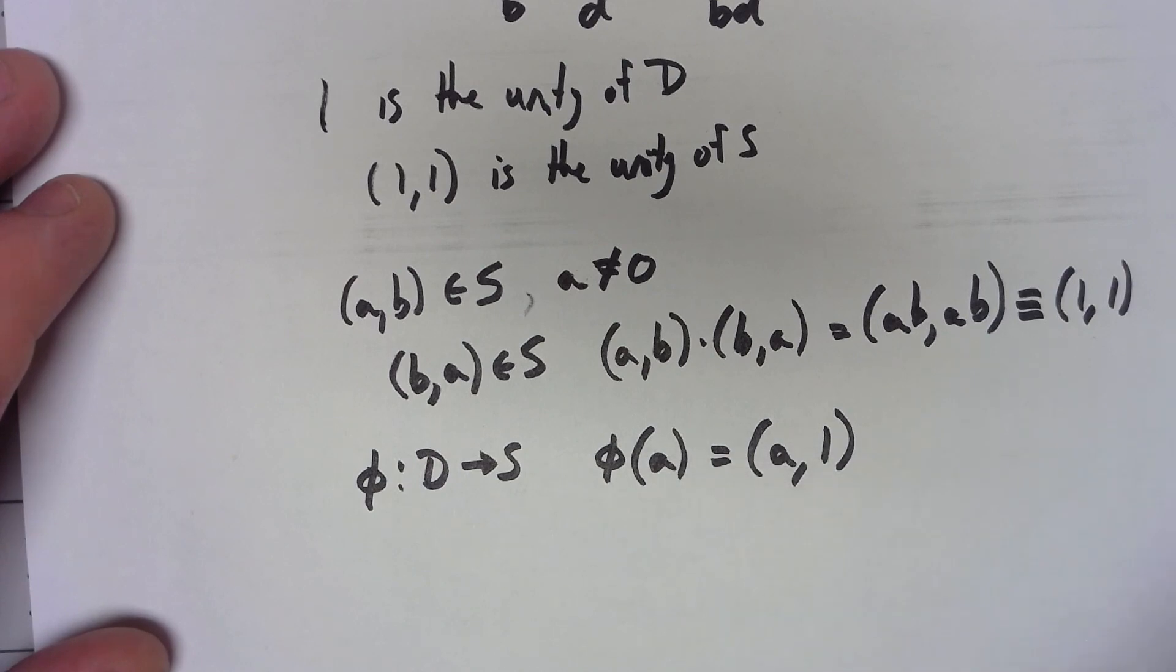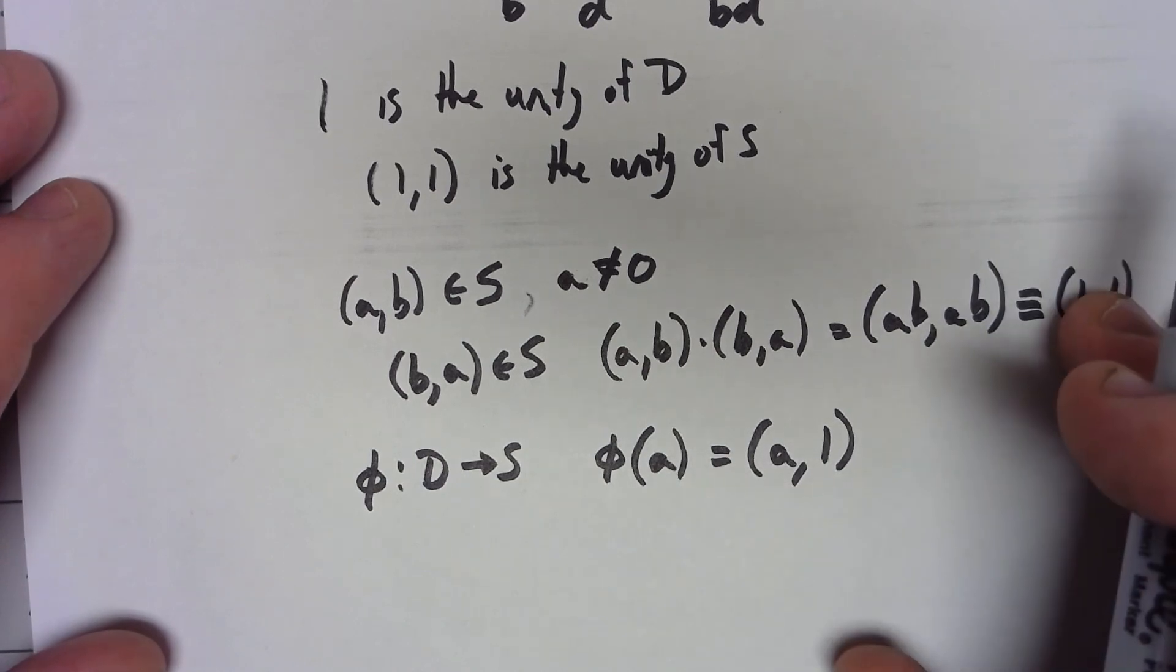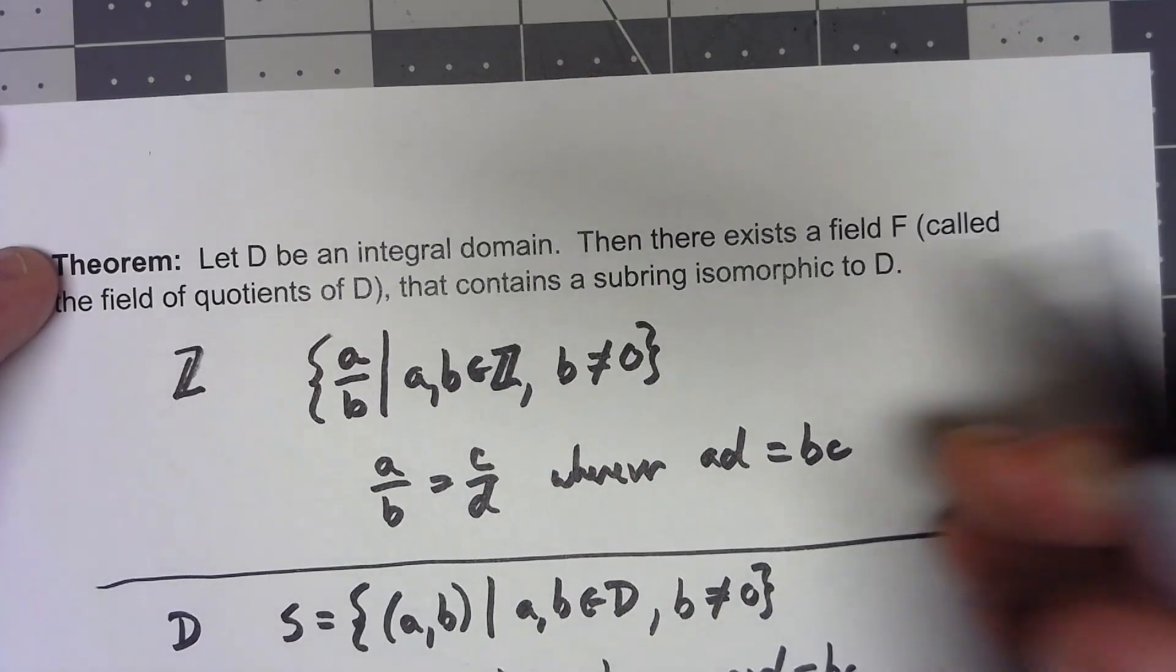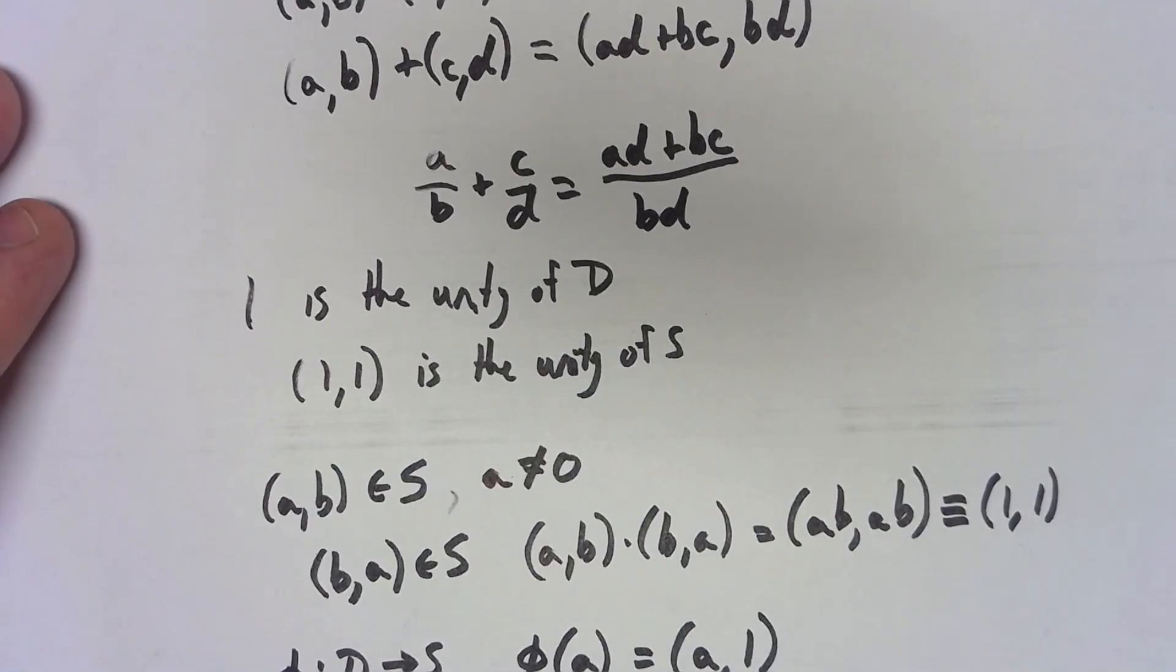And so again, S itself is not isomorphic to D, but the subring, which is the image of this homomorphism, is isomorphic to D.